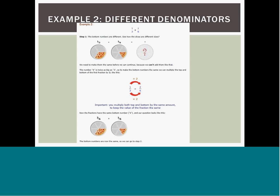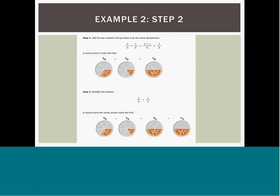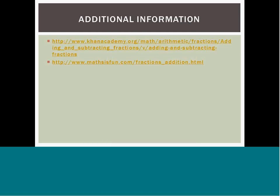For fractions that have uncommon denominators, first make the denominators the same by multiplying both the numerator (top) and denominator (bottom) by the number that causes the denominators to be equal, as shown in step 1 of the slide. Then add the numbers and put them over the same denominator as shown in step 2. For additional practice with fractional math, you can go to KhanAcademy.org or mathisfun.com.